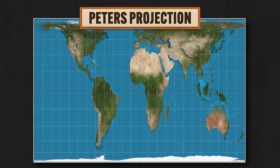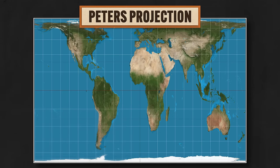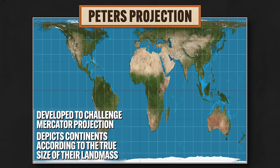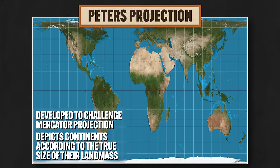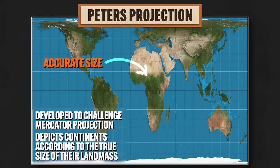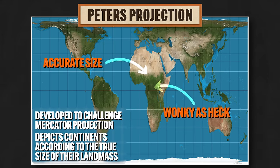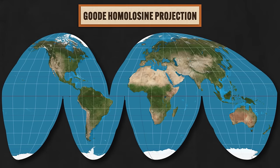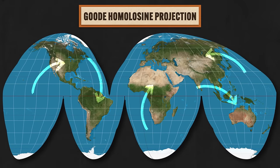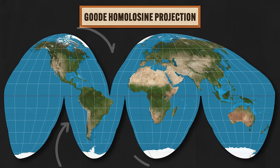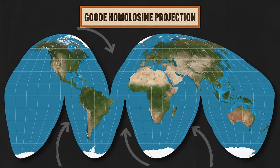The second map projection is the Peters projection, which was developed to challenge the Eurocentric Mercator projection by depicting continents according to the true size of their landmass. But the lie here is that while the size of the landmasses are accurate, the true shape of them is wonky as heck. The third map projection to know is the Goode's Homolosine projection, which accurately represents the shapes of the landmasses, but has to break up the oceans to do so — which is a lot.